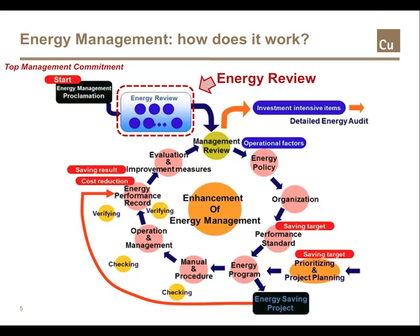To structure the energy management system, current energy use has to be understood. Therefore, an energy review process must take place before the system can be implemented. After the initial implementation, repeated plan, do, check, action cycles create a continuous energy performance improvement cycle. That top management commitment must continue, and frequent management reviews help to maintain the impetus.